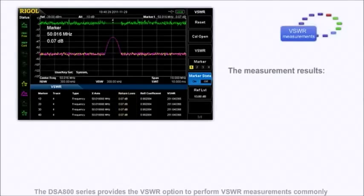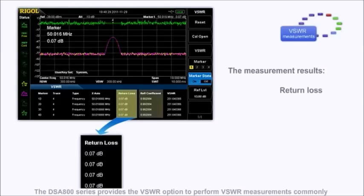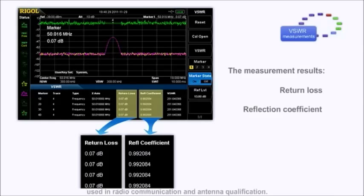The DSA800 series provides the VSWR option to perform VSWR measurements commonly used in radio communication and antenna qualification.